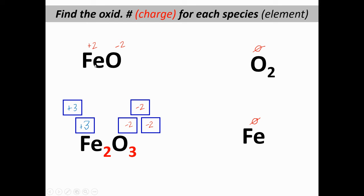In FeO, oxygen is almost always minus two, so iron must be plus two. O₂ and Fe by itself are both free elements — charge is zero. In Fe₂O₃, oxygen is minus two and there are three of them — minus two times three is minus six. The iron must balance that out.